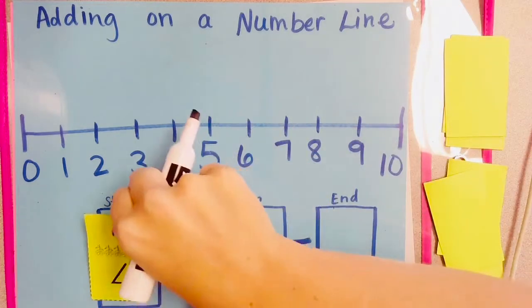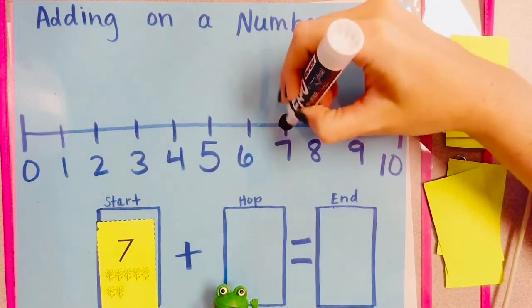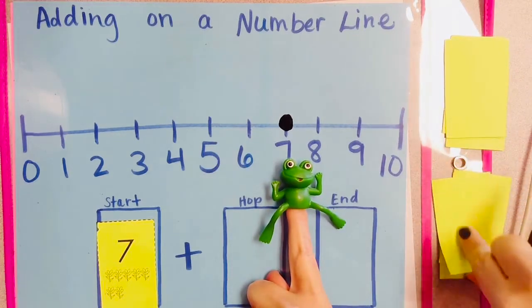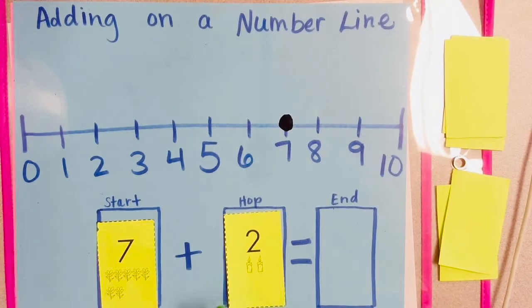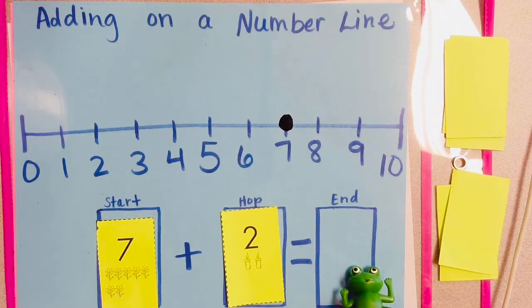Alright, we're going to start with the number 7, Mr. Frog. Put a little lily pad on 7. And we're going to have our second number be 2. And the second number shows us how the starting number is going to change to get to the ending number.